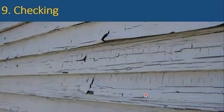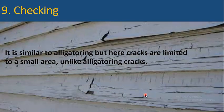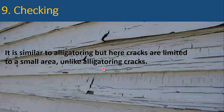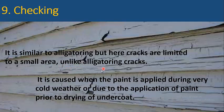Checking is similar to alligatoring, but here cracks are limited to a small area, unlike alligatoring cracks. It is caused when the paint is applied during very cold weather or due to the application of paint prior to drying of the undercoat.